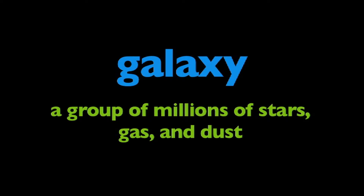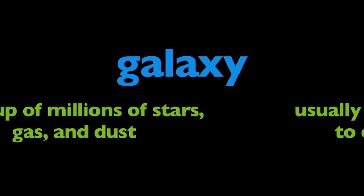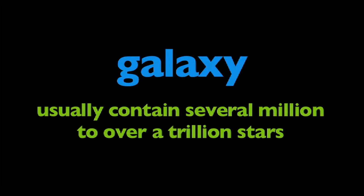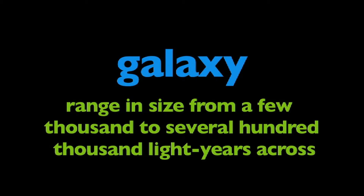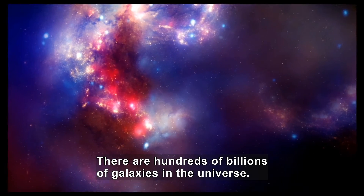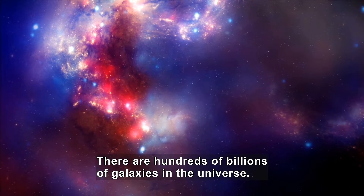What is a galaxy? A galaxy is a group of millions of stars, gas, and dust. They usually contain several million to over a trillion stars and range in size from a few thousand to several hundred thousand light-years across. A formation in space has clusters of red and white light. There are hundreds of billions of galaxies in the universe.